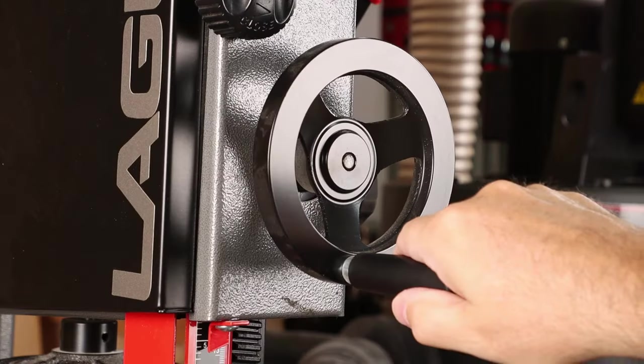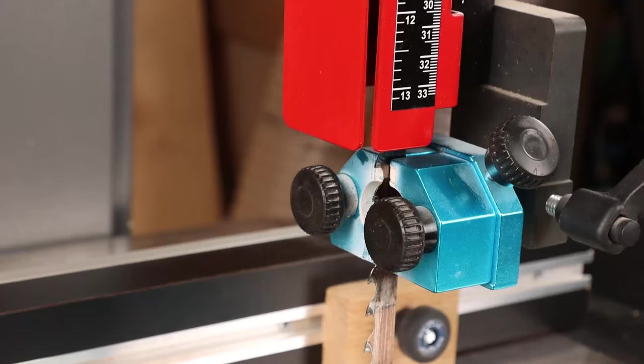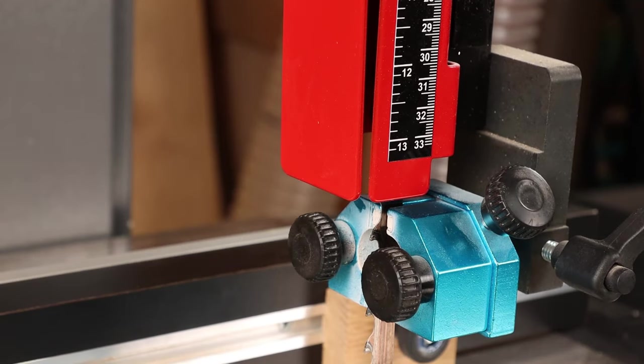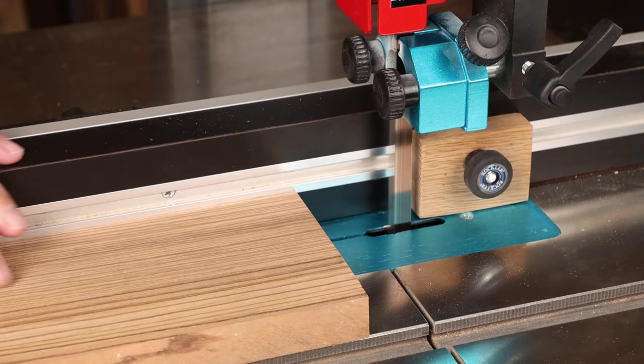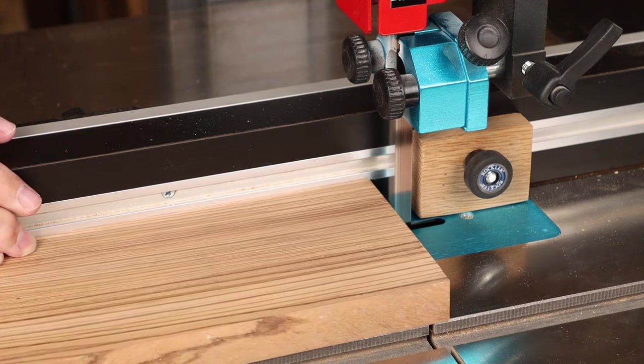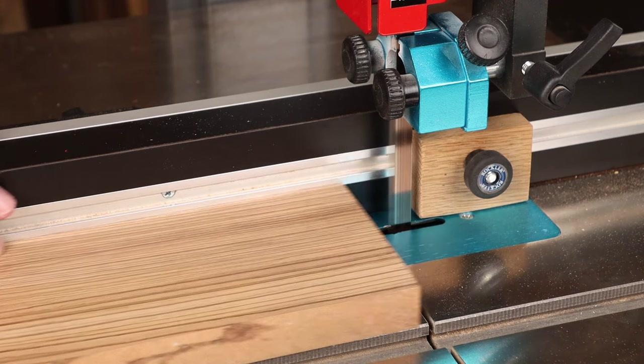Of course, the main benefit of a lower fence is you can lower the guide blocks for safety. Another big benefit for me is that stop block, so you can make quick and accurate notching cuts.